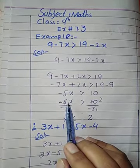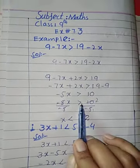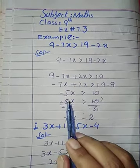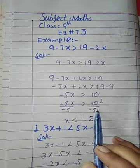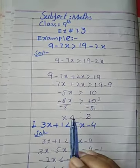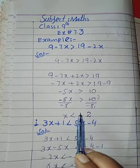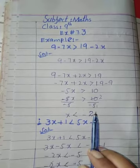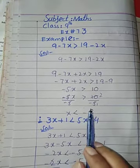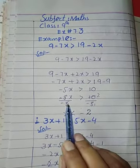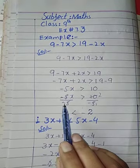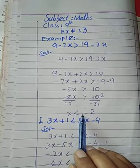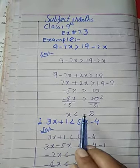We get minus 5x divided by minus 5 greater than 10 divided by minus 5. Now minus 5 cancels with minus 5, giving x. Students, in an inequality if we divide or multiply by a negative number the sign of inequality must be changed. We divided by the negative number minus 5, so the sign of inequality must be changed. So we write x less than minus 2.